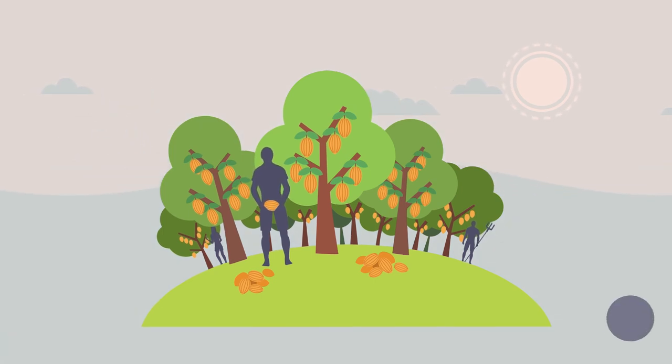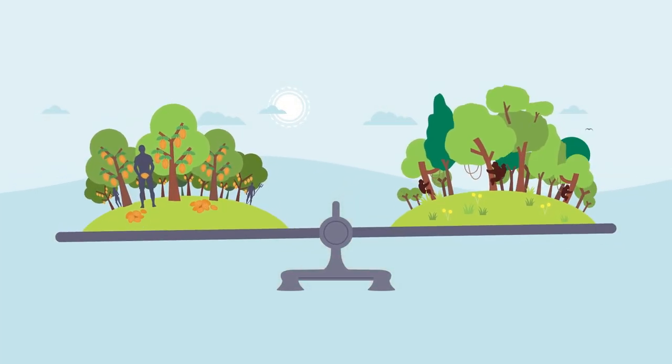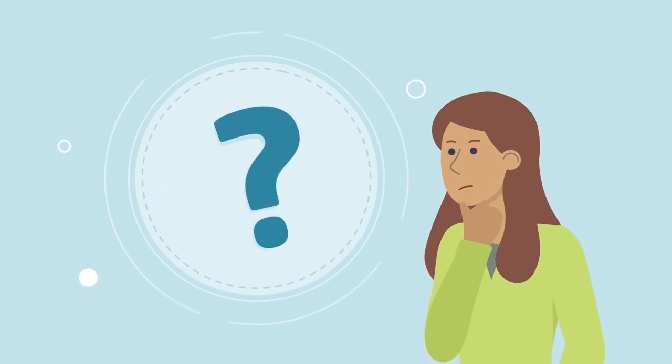In order to protect biodiversity, while supporting the livelihood of cocoa farmers, a sustainable balance must be found. So, how can we stop biodiversity loss and preserve our life insurance system?